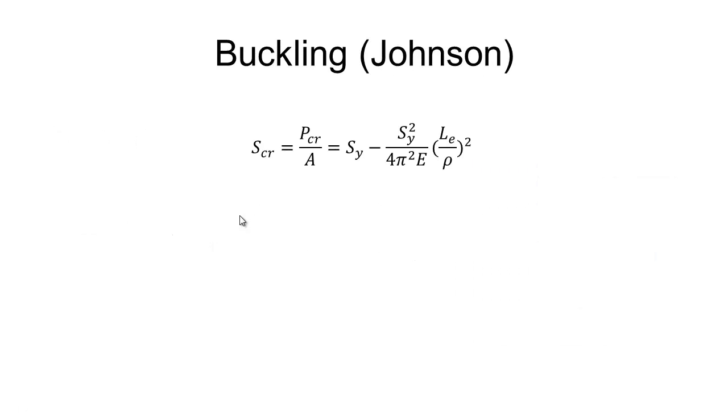Now another equation for buckling is the Johnson equation. Now this is similar to the Euler equation. So we've got an effective length term. The only difference is this is an actual, this term is actually plotted as a parabola. And to determine our critical stress we have to take into consideration the material yield stress. So once again not too hard to actually use and get numbers for.